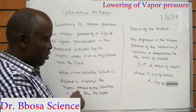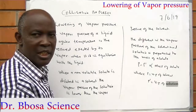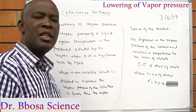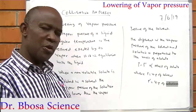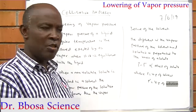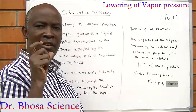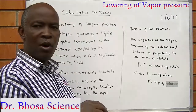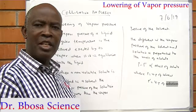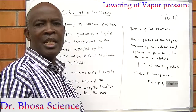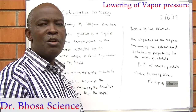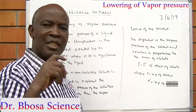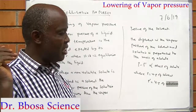When a non-volatile solute is dissolved in a solvent, the vapor pressure of the solution is lower than the vapor pressure of the solvent. The difference in the vapor pressure is proportional to the mass of solute dissolved. So the more mass of solute dissolved in a given mass of solvent, the lower the vapor pressure of the solution, and the difference becomes bigger as the mass of solute dissolved becomes bigger.